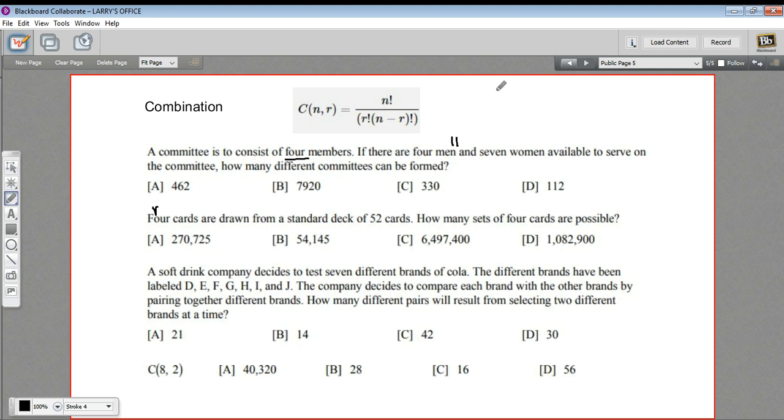Our n is 11. So I'm going to have 11 factorial on the top. And r is 4, the number of people we're choosing. So that's 4 factorial times n minus r factorial. 11 minus 4 is 7. So 7 factorial.